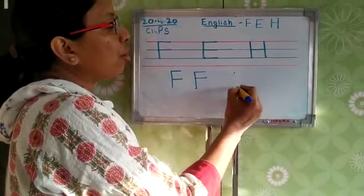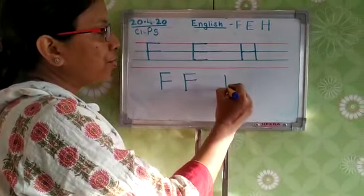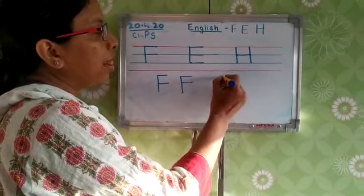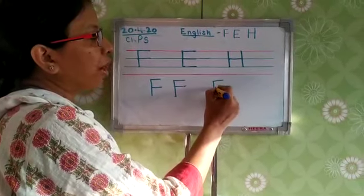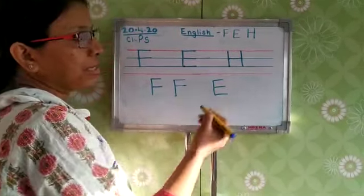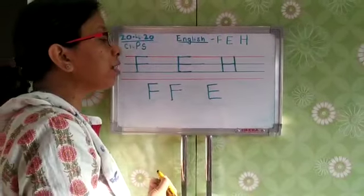We move to letter E. Put dots, moving up to down and left to right, with three sleeping lines. This is the formation of letter E.